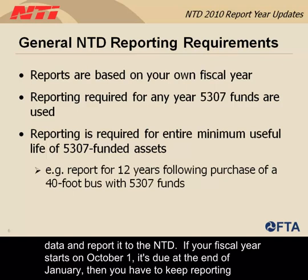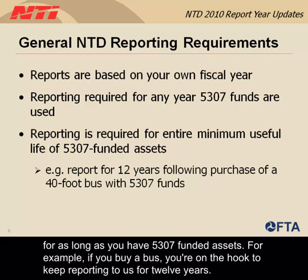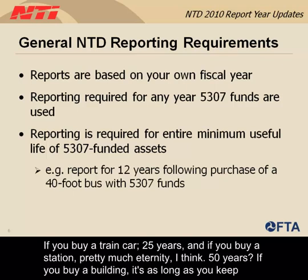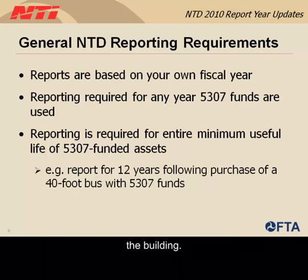You have to keep reporting for as long as you have 5307-funded assets. The typical example: if you buy a bus, you're on the hook to keep reporting for 12 years. If you buy a train car, 25 years. And if you buy a building, it's as long as you keep the building.